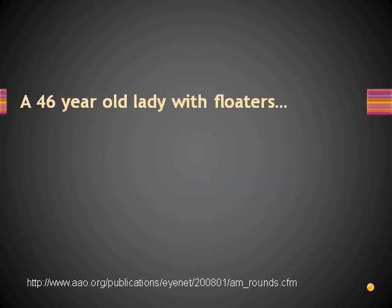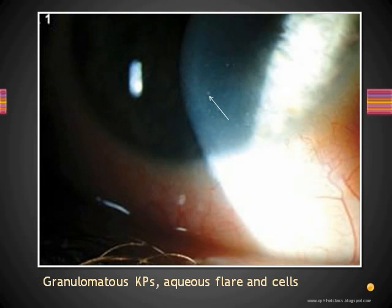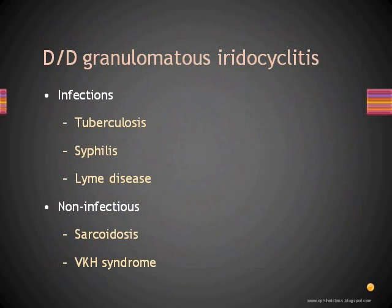A 46-year-old lady presents with floaters. On examination she has granulomatous keratic precipitates, aqueous flare, and cells. One would therefore consider the differential diagnosis of granulomatous iridocyclitis. Infectious causes to be considered include tuberculosis, syphilis, and Lyme disease. Non-infectious causes to be considered include sarcoidosis and Vogt-Koyanagi-Harada syndrome.